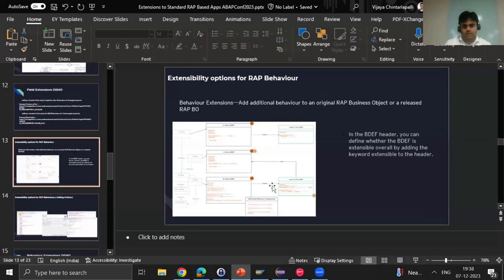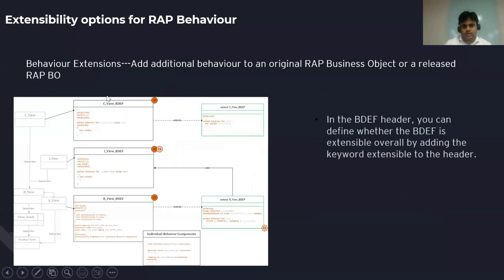Now let's go to behavior extension. What is a behavior extension? If you want to add an additional behavior to the original business object — for example, for a sales order, if you'd like to set a latest delivery date — in these scenarios you extend the behavior definition. The only thing you need to check for is the 'extensible' keyword. If SAP has not provided this extensible keyword, the behavior definition cannot be extended.